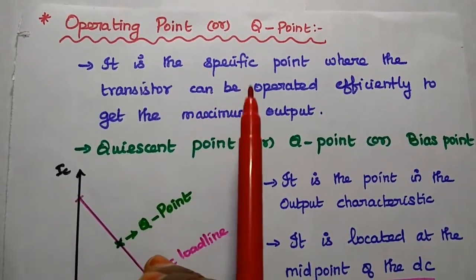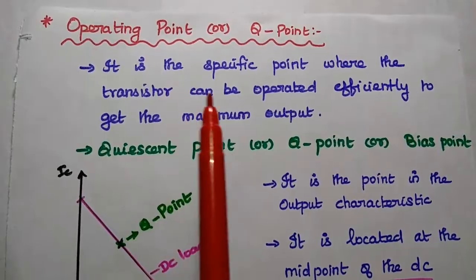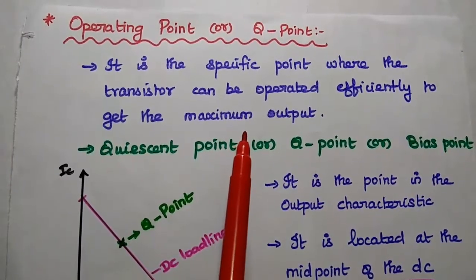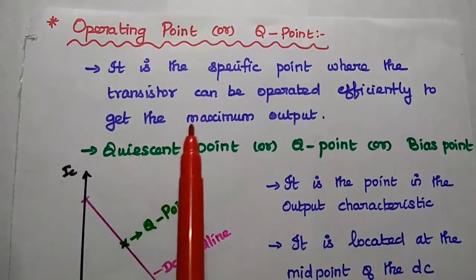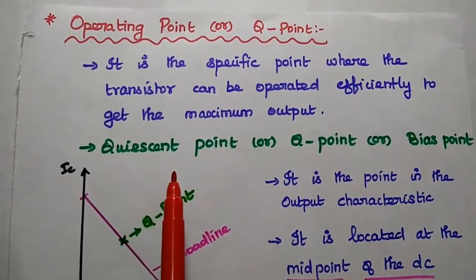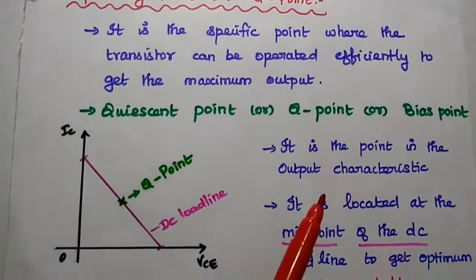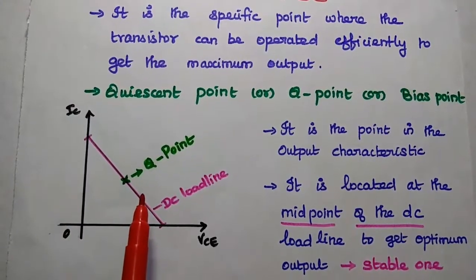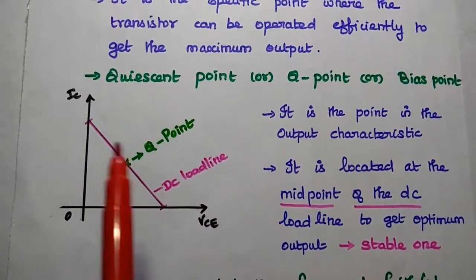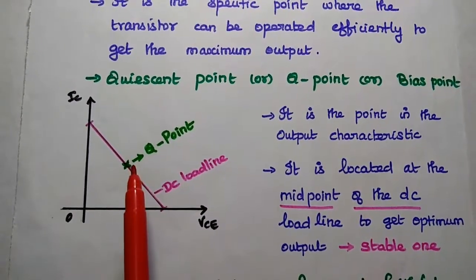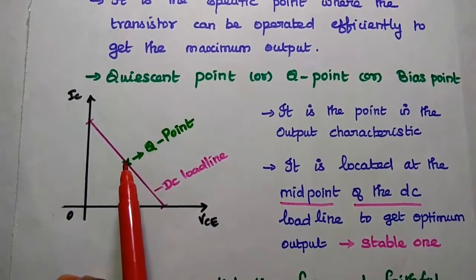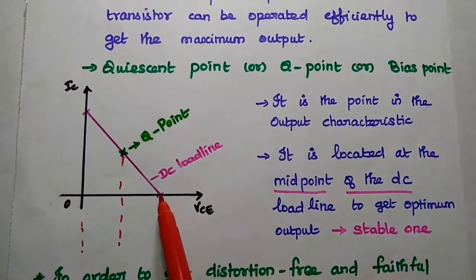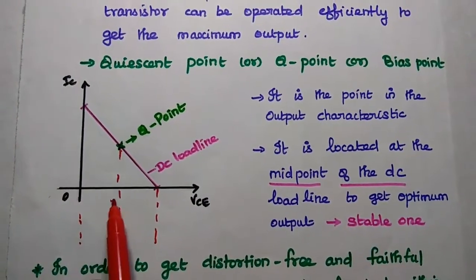Next, we discuss the operating point or Q point. This operating point is the specific point on the output characteristics of the transistor where we can get the maximum output without any distortion. That point is known as the operating point, Q point, or bias point. This point is located at the midpoint of the DC load line to get the maximum output and should always be stable to get a stable output.